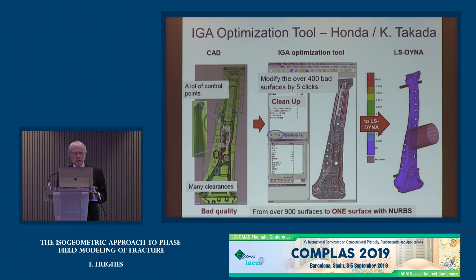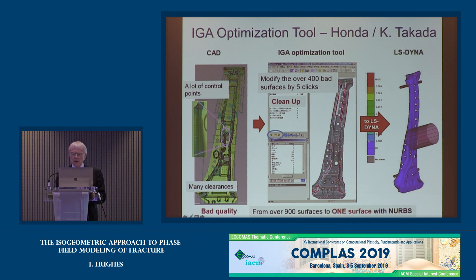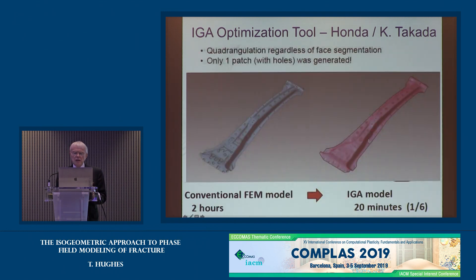Here's an example of how these ideas are being used in industry. A B-pillar from Honda, from Kenji Takata's group — a bad-quality CAD file with over 900 surfaces, again with gaps and overlaps — is essentially mapped onto one trimmed patch. LS-Dyna can run that directly; it's much faster than traditional methods and produces quite accurate, in fact more accurate, results.